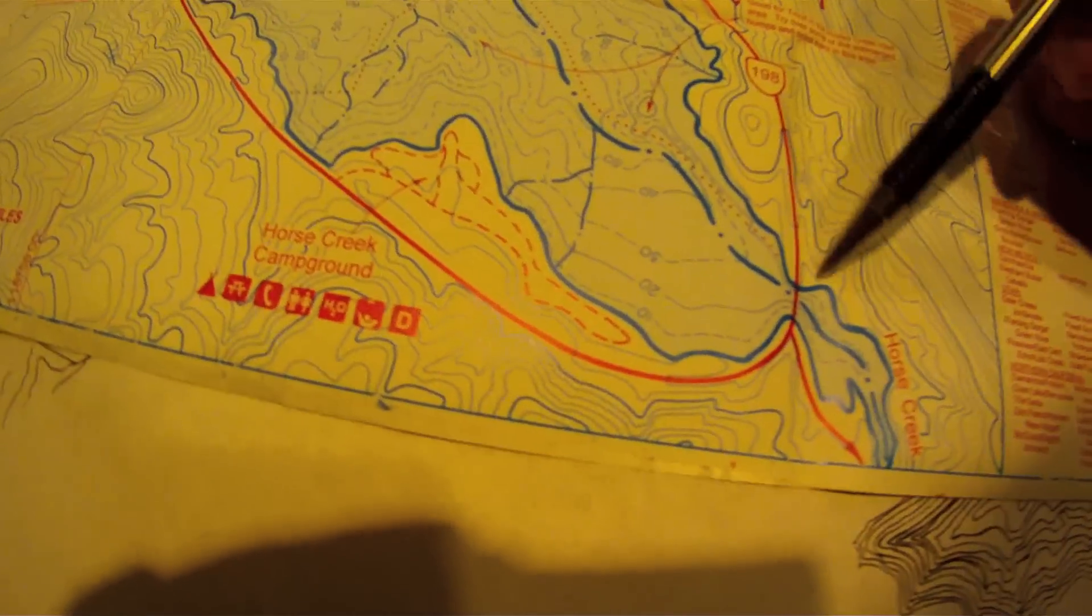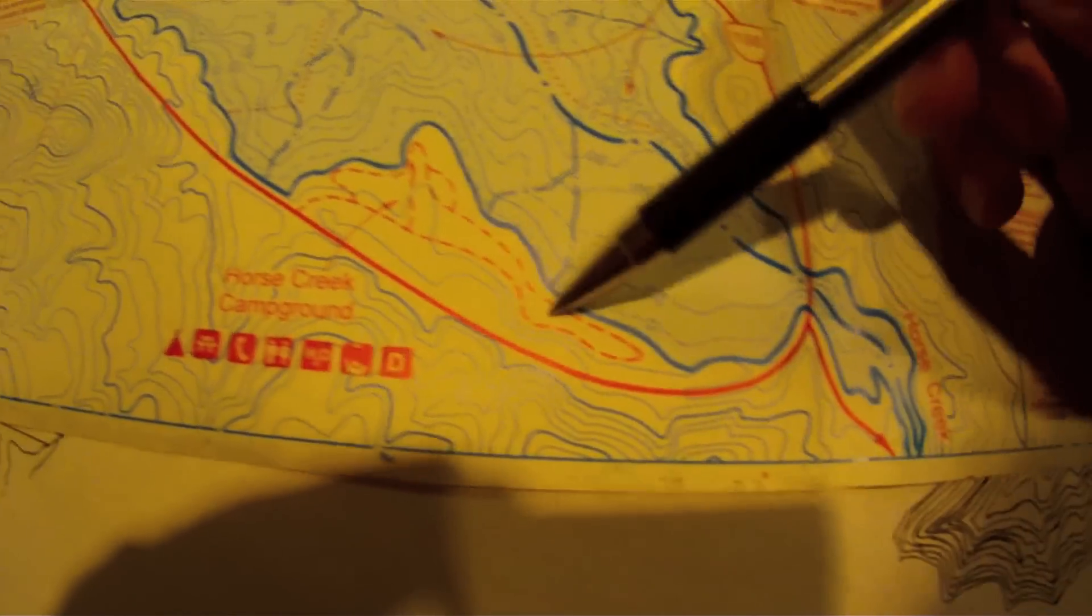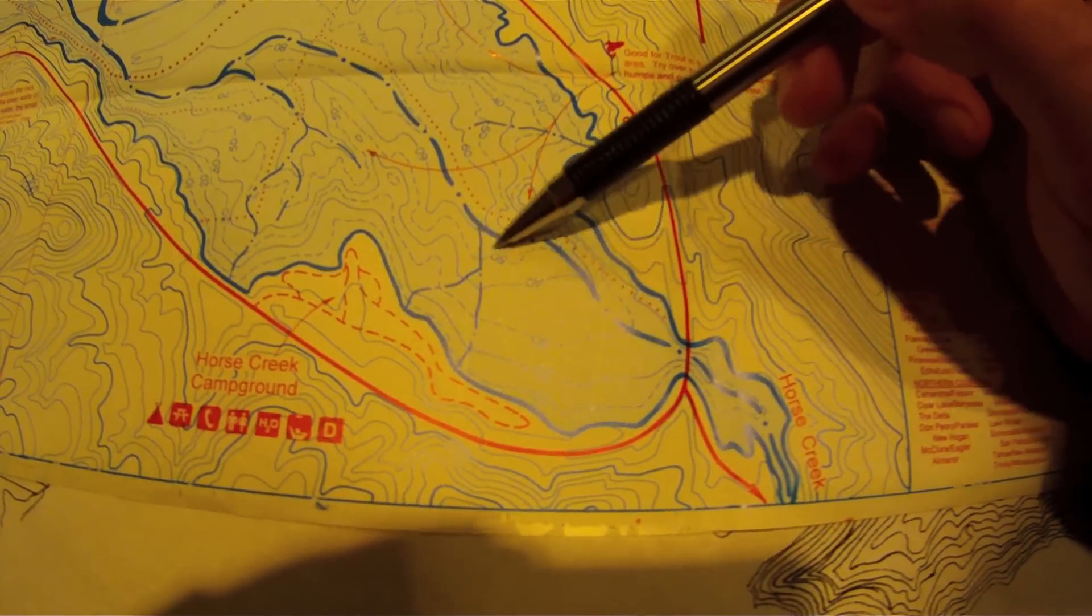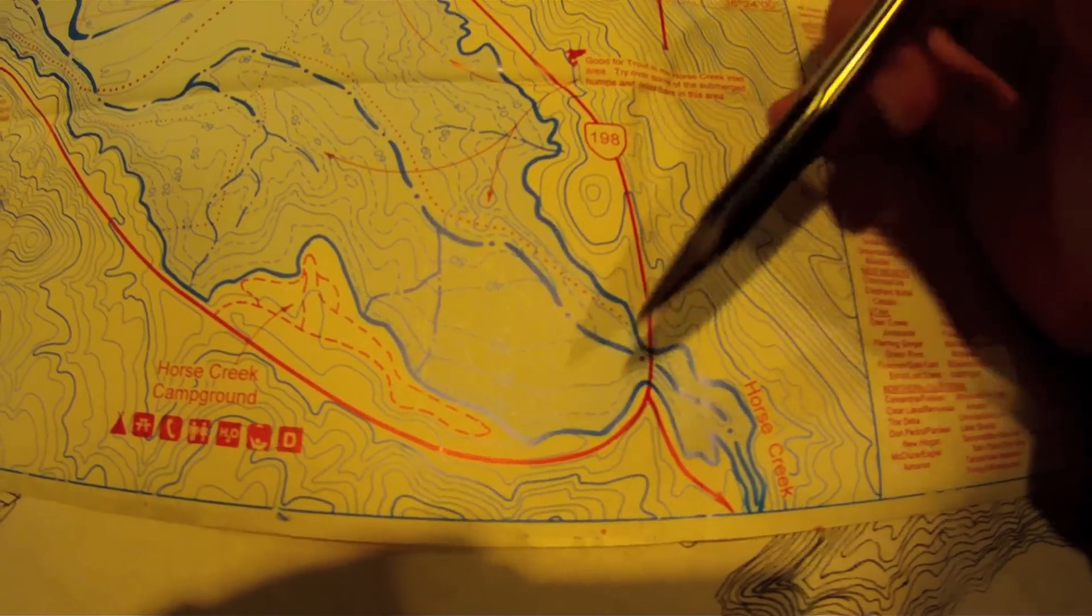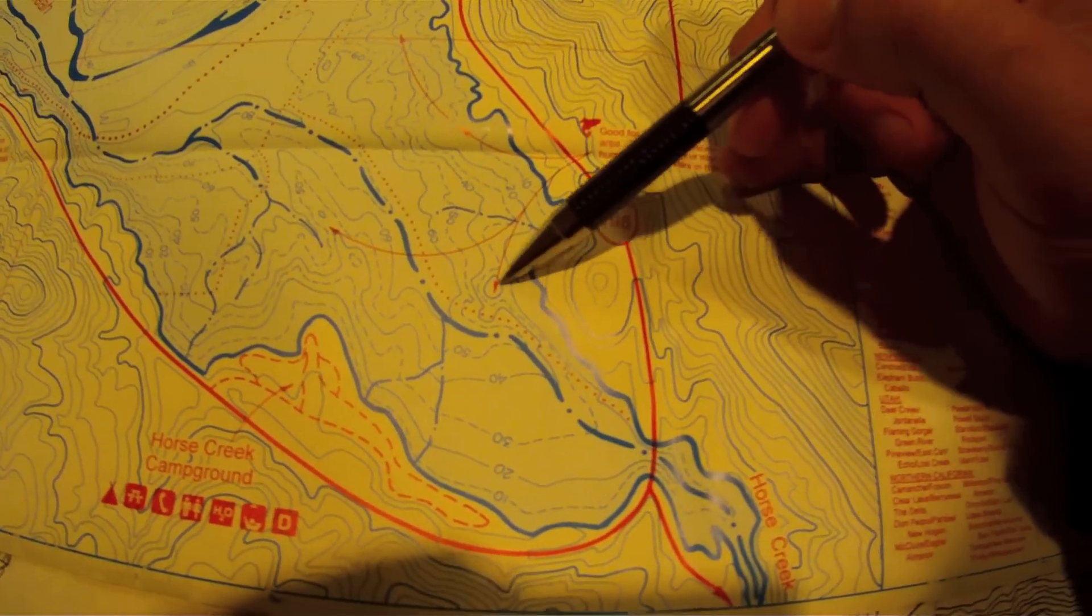This area right here. This is a cove. You've got a creek channel that runs in. You're going to get a lot of runoff here. You've got feeder creeks coming in on the sides. You've got a giant flat out here. You're not going to be able to fish this flat effectively from this area here.